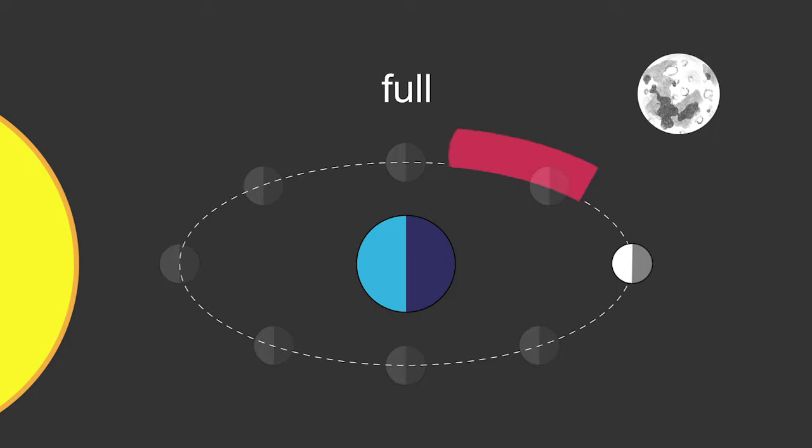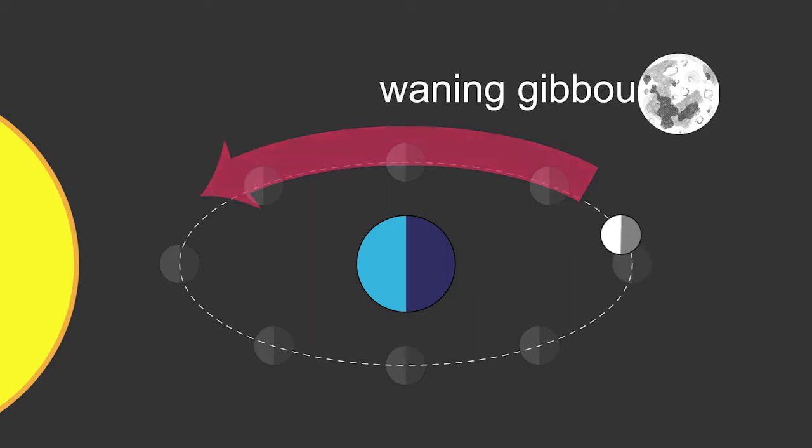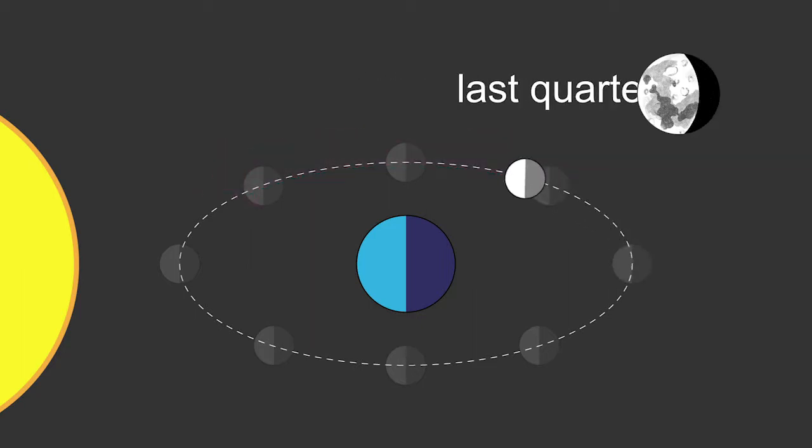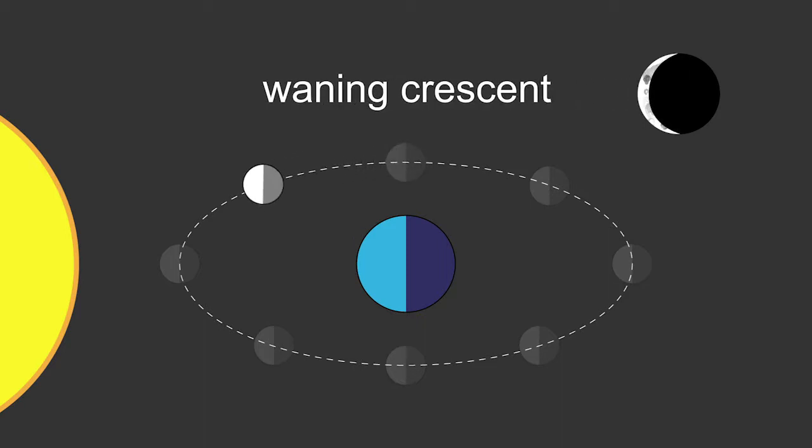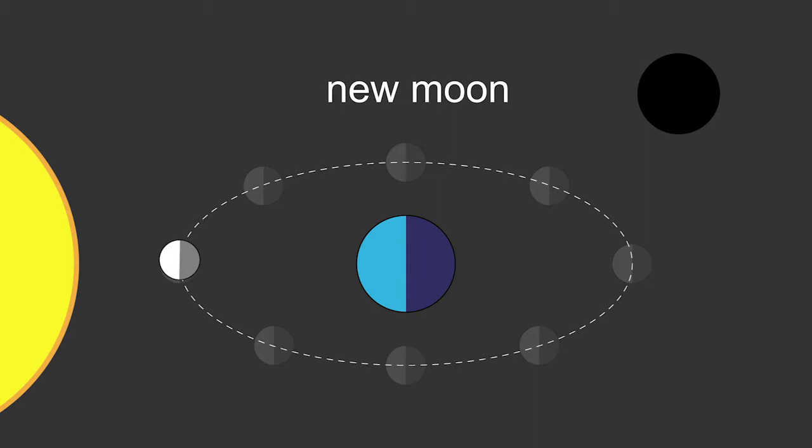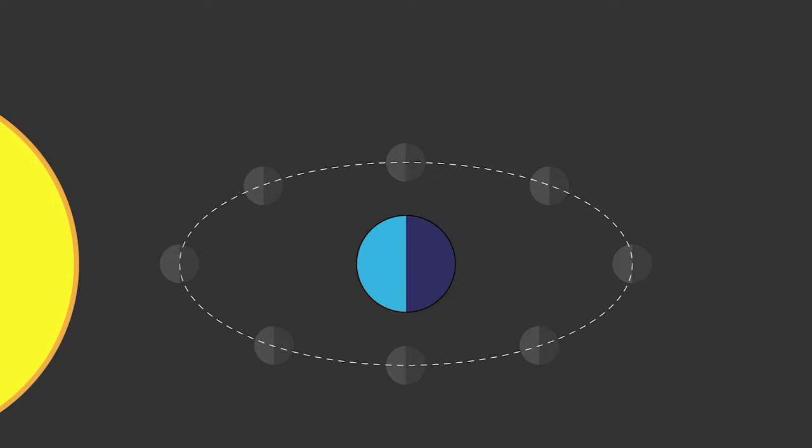The same steps happen in reverse on the waning side: waning gibbous Moon, last quarter Moon, and waning crescent Moon. The Moon then makes a full cycle back to the New Moon phase. The full lunar phase cycle takes 29.5 days.